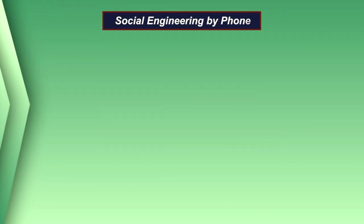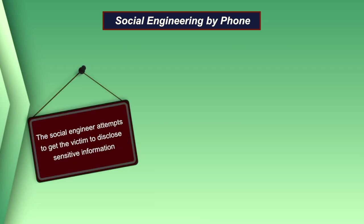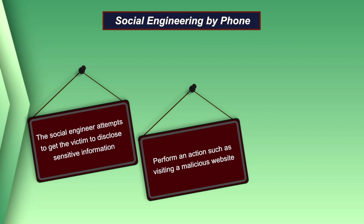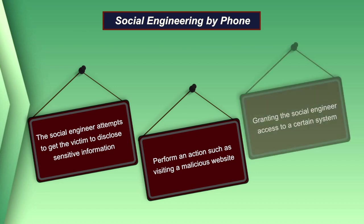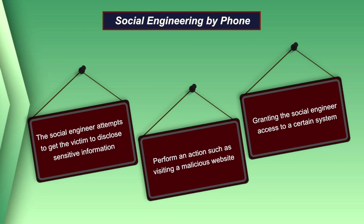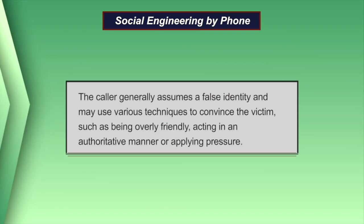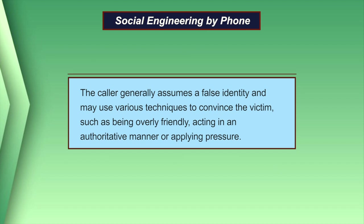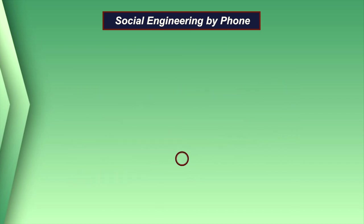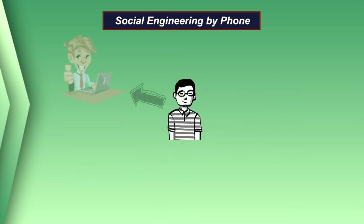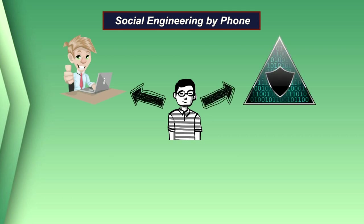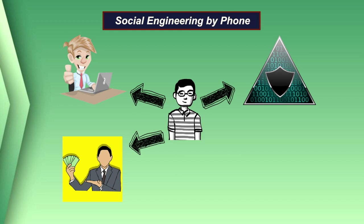Now let us discuss one of the important techniques of social engineering: social engineering by phone. The social engineer attempts to get the victim to disclose sensitive information or perform an action such as visiting a malicious website or granting access to a certain system. The caller generally assumes a false identity and may use various techniques such as being overly friendly, acting in an authoritative manner, or applying pressure. The caller may purport to be from tech support, an antivirus organization, a financial institution, or even a charity.